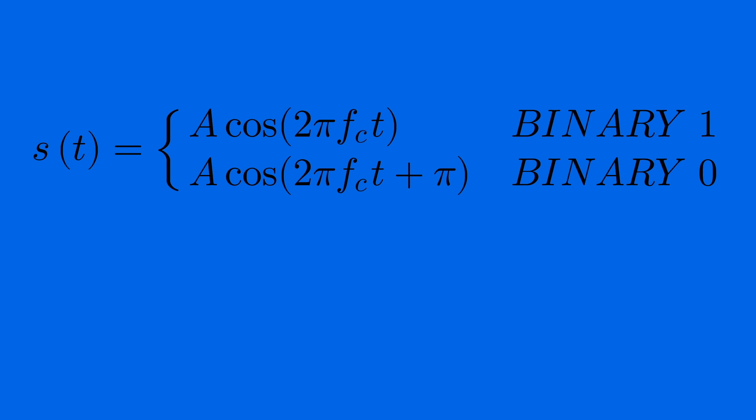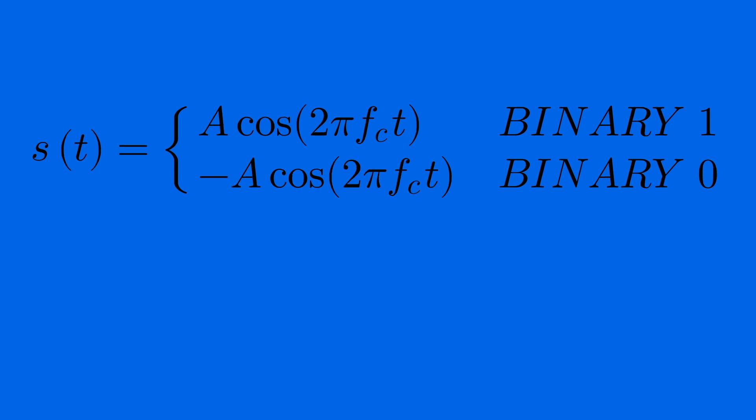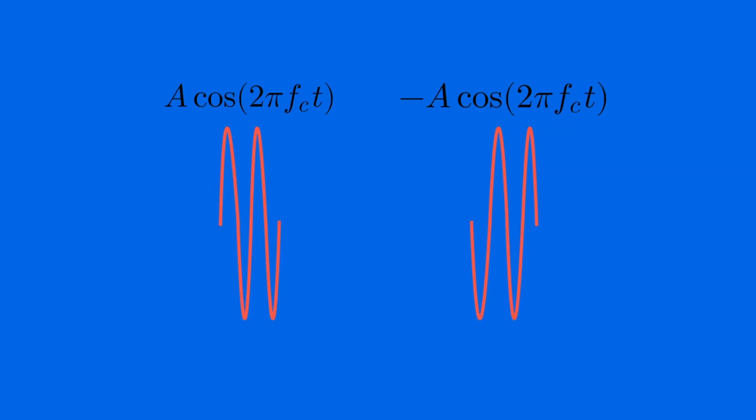By applying some trigonometric identities, this can be represented more simply as just a negation of the binary one's signal, which basically results in a phase shift of 180 degrees.